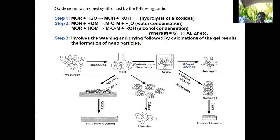Step two is condensation followed by polycondensation. In water condensation, water is removed: M-OH plus M-OH forms M-O-M plus H₂O. In alcohol condensation, alcohol is removed. Here M can be silicon, titanium, aluminum, or zirconium. Step three involves allowing gelation to occur, and step four is the drying process. This involves washing and drying followed by calcination of the gel, resulting in the formation of nanoparticles.